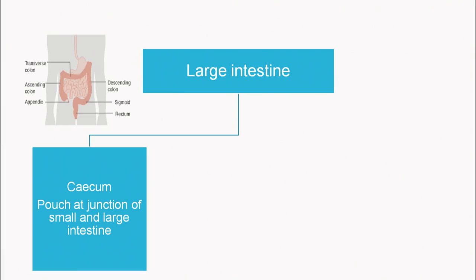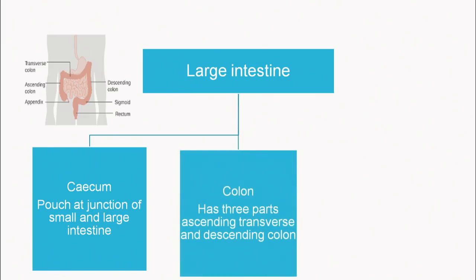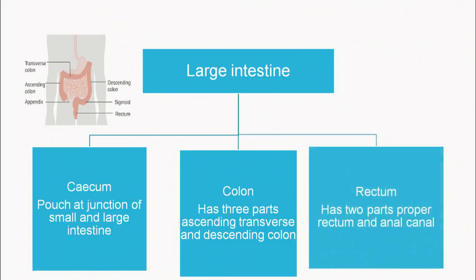The small intestine extends into the large intestine, which has three parts: cecum — a pouch at the junction of small and large intestine; the colon — which has ascending, transverse and descending portions; and then the rectum, which ends in an anal canal through which waste material moves out of the body.